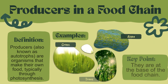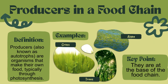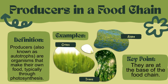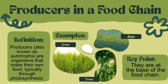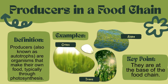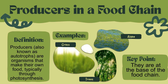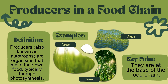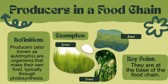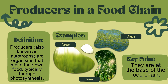Producers in a food chain: producers, also known as autotrophs, are organisms that make their own food, typically through photosynthesis. They are at the base of the food chain. Some examples of producers are grass, algae, and trees.